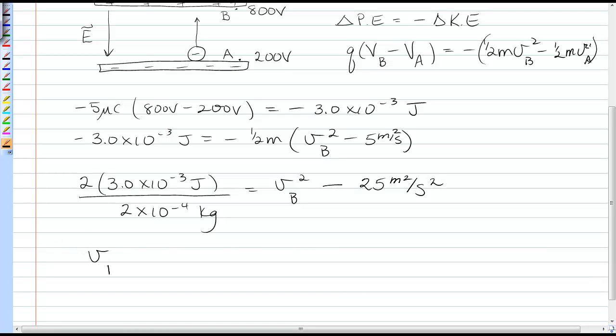So solving that gives us Vb is equal to 7.42 meters per second, which is indeed what we would expect as the negative charged particle accelerates toward that positive plate and in the process speeds up.